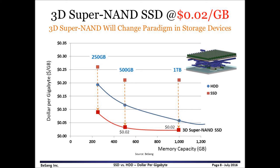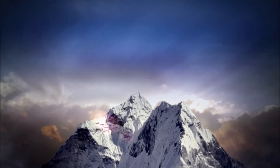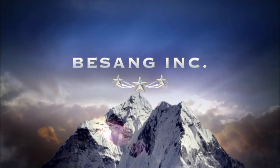3D Super NAND will enable SSD price to drop down to 2 cents per gigabyte, and it will happen within 2 years. Then the price comparison between SSD and HDD will look like this graph. Regardless of memory capacity, 3D Super NAND will provide cost-competitive SSD. Certainly, customers will be the winners because of affordable storage devices. Thank you for watching — please leave comments and feel free to share this video. We'll see you next time.